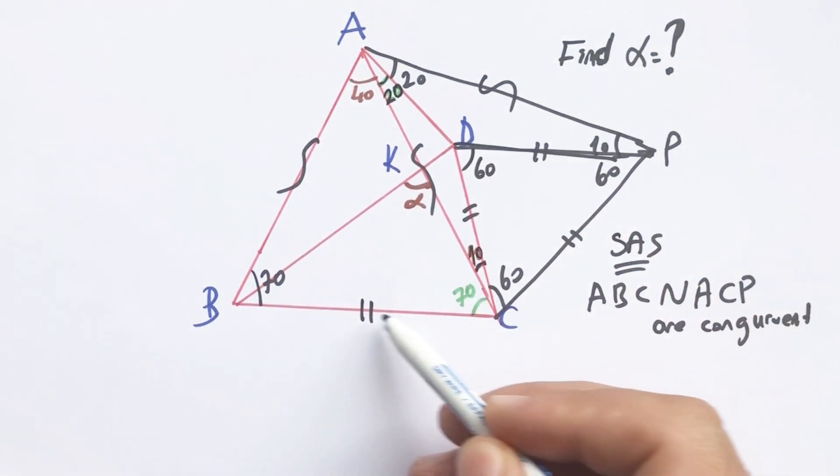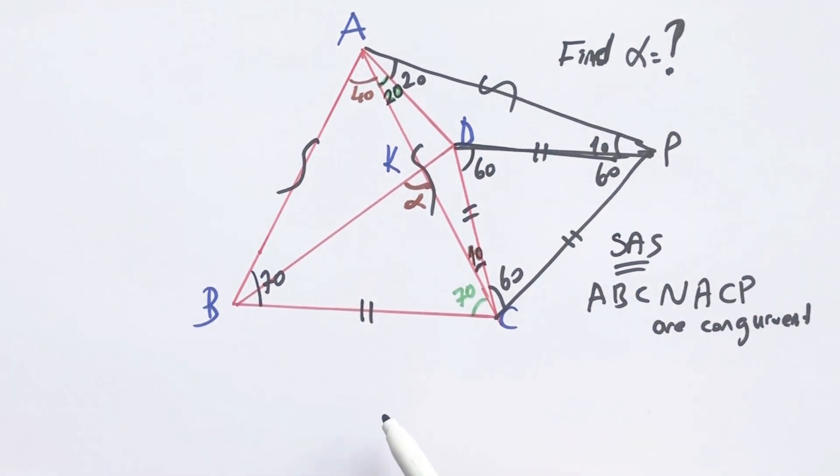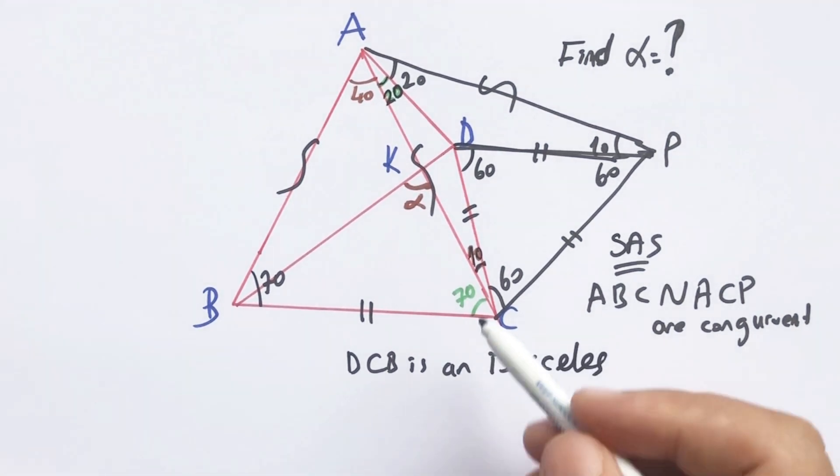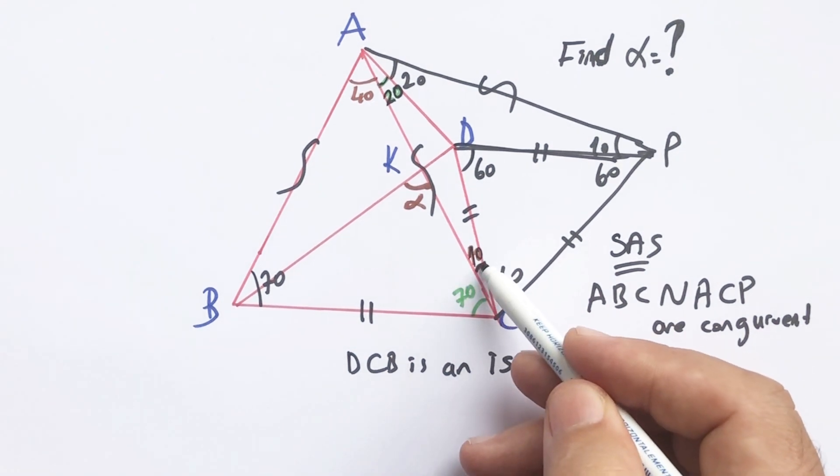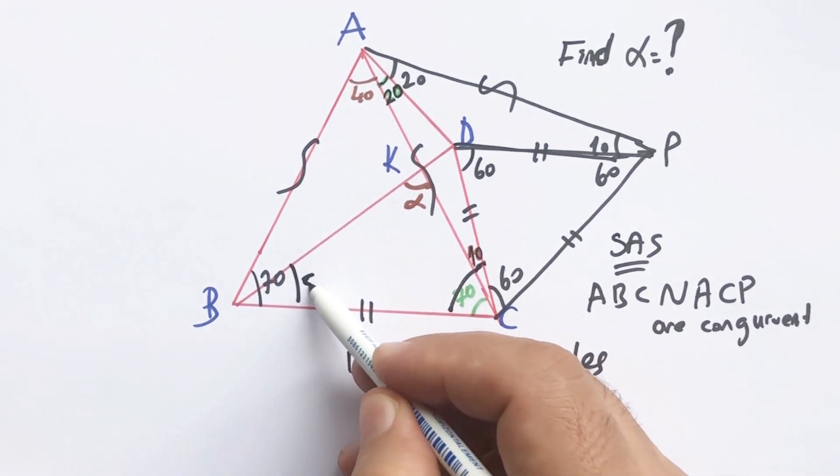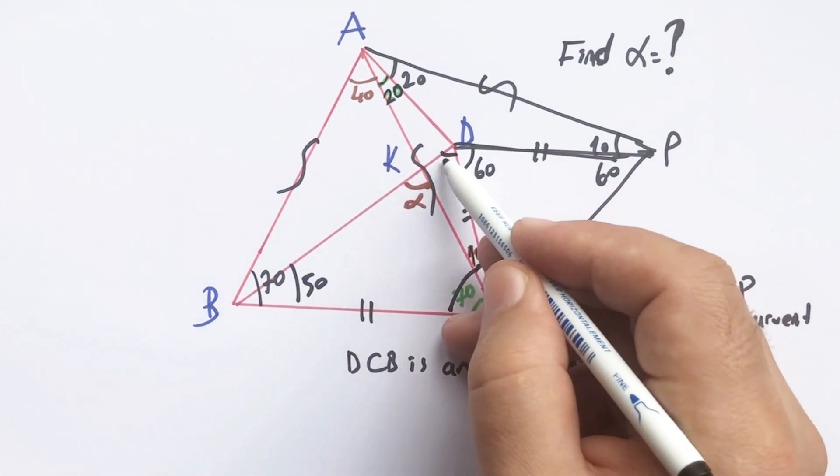If you notice that we have an isosceles triangle again. DCP triangle is an isosceles triangle and the apex is 80 degrees. Therefore, the base angles must be 50 degrees.